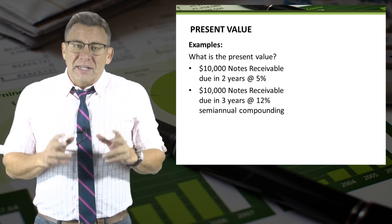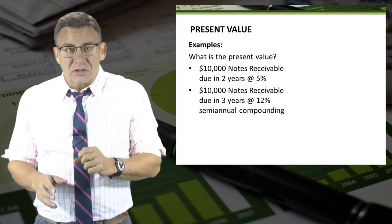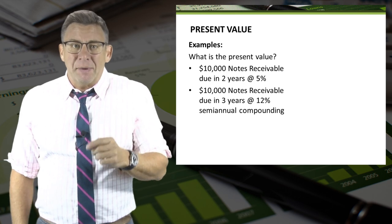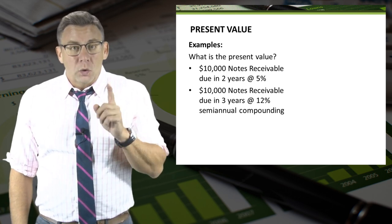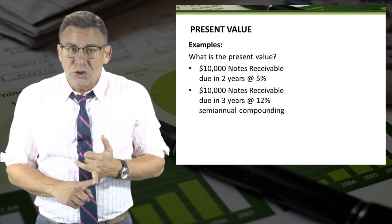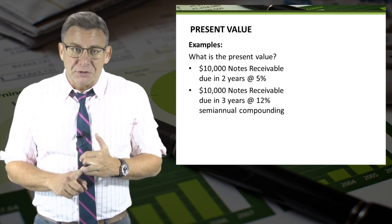We'll do a $10,000 notes receivable due in three years at 12% compounded semiannually. When we compound something semiannually, we divide the interest rate by two, and we multiply the number of periods by two.